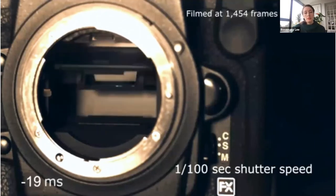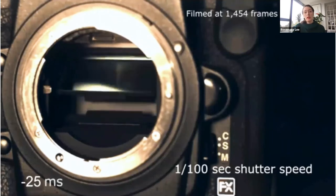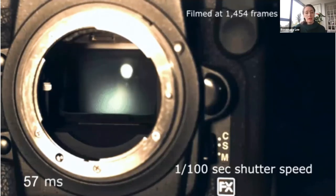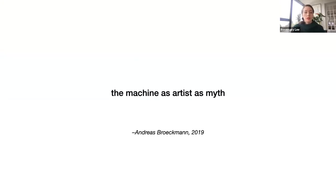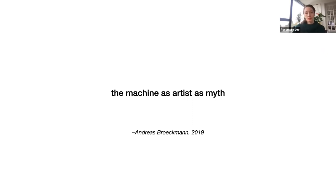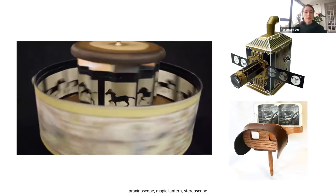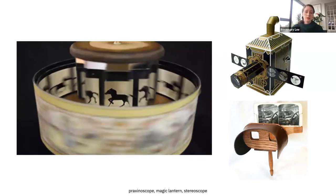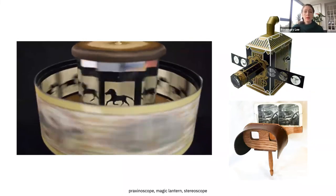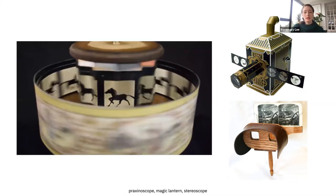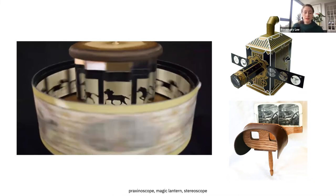In its early days, photography was seen as inferior to painting because of its reliance on automation. This lent itself to the idea that it was the machine, and not the photographer, who was responsible for any artistic merit a photographic image may have. Andreas Brückmann calls this the myth of the machine as artist — a theme which continues to arise in relation to technically produced images even today. Additionally, because the camera was seen as distancing the photographic process from the subjectivity of the photographer, it contributed to a view of technically produced images as innately objective or truthful.